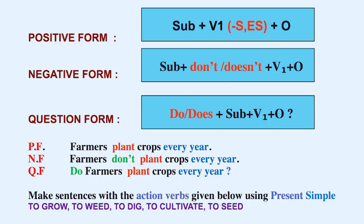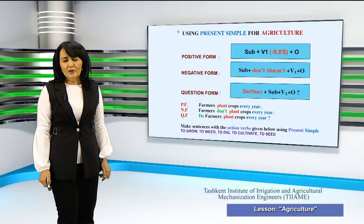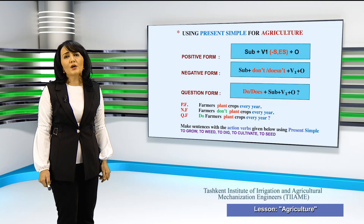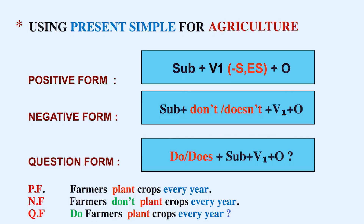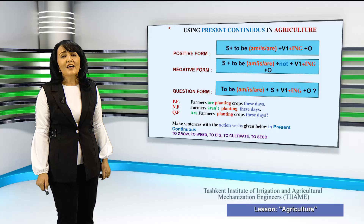In the slide you can see the usage of the verb 'plant' with agriculture-related terms. For example: 'Farmers grow crops every year.' Negative: 'Farmers don't grow crops every year.' Question: 'Do farmers grow crops every year?' This structure in question form can be varied: 'Don't farmers grow crops every year?' 'Why do farmers grow crops every year?' 'Why don't farmers grow crops every year?' Below the slide you can see several verbs which you can use in your own practice by making sentences in different ways.